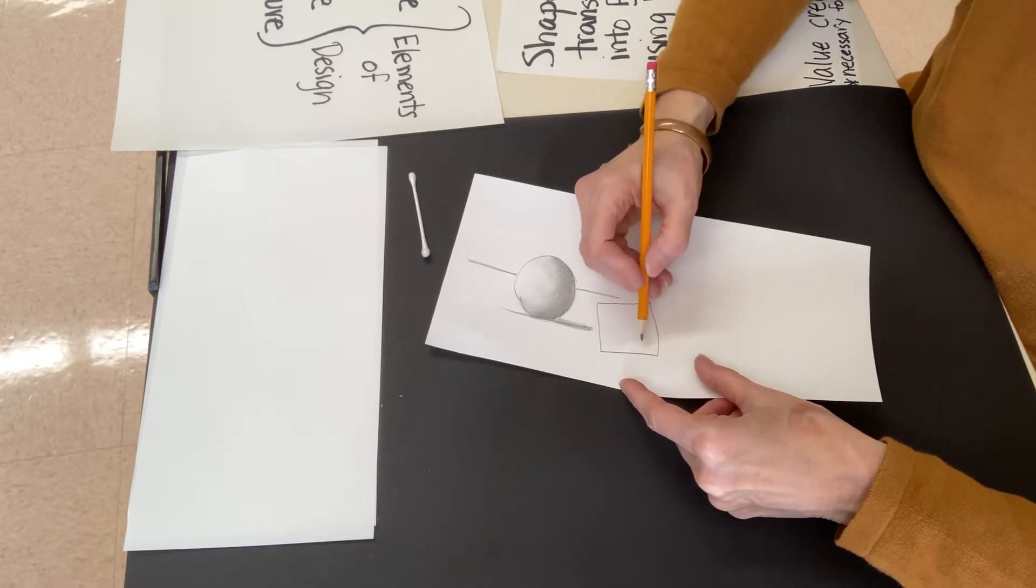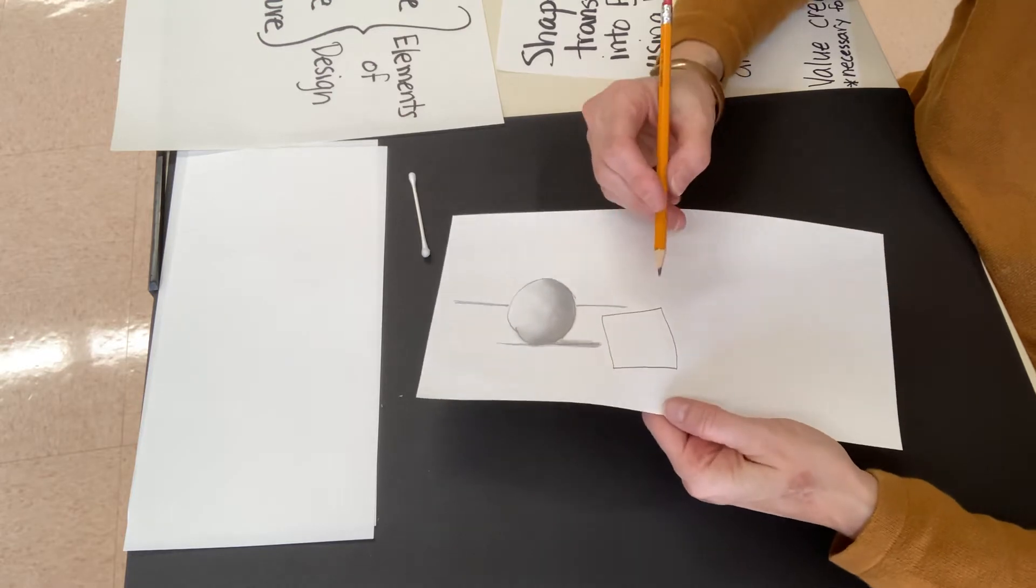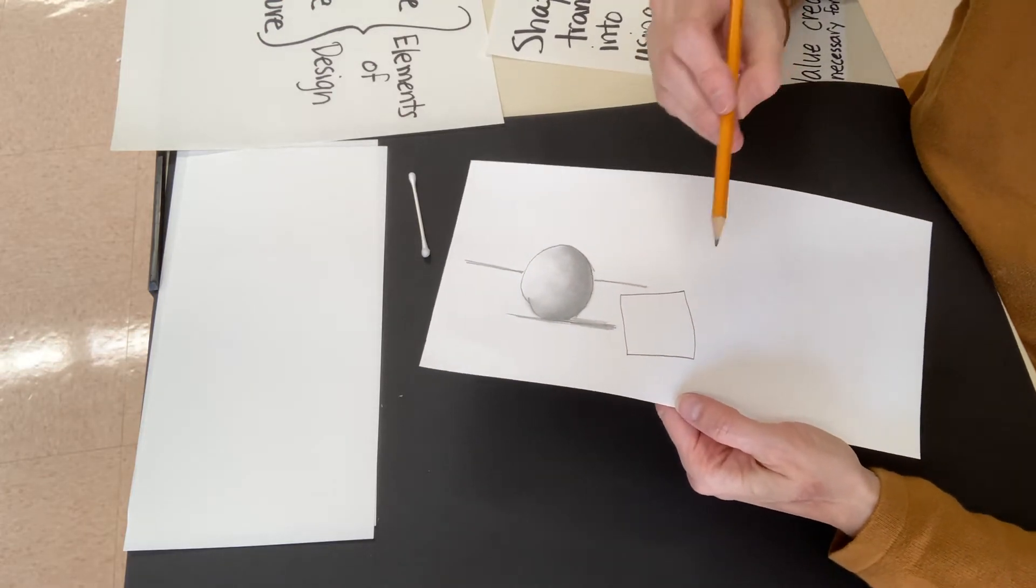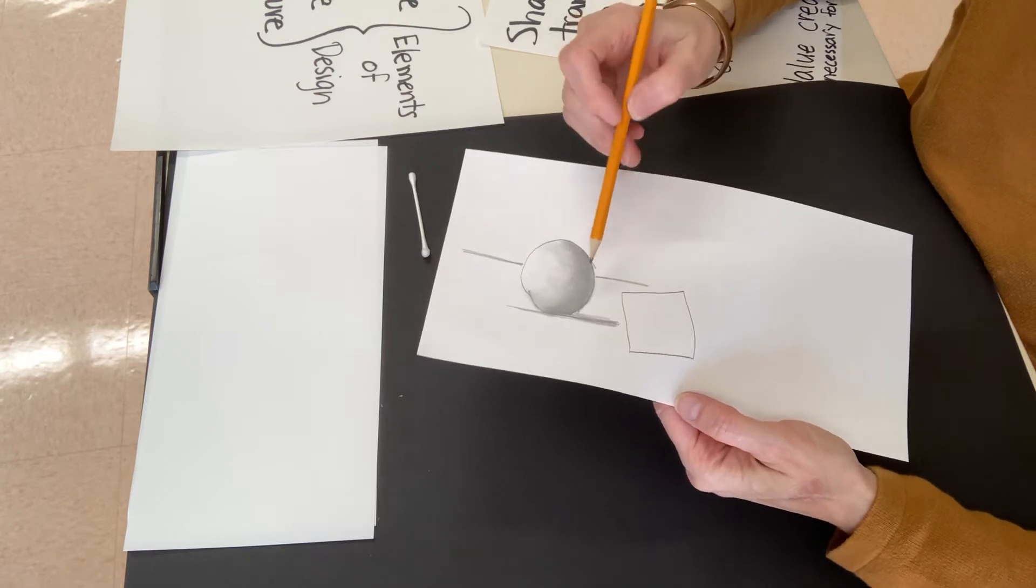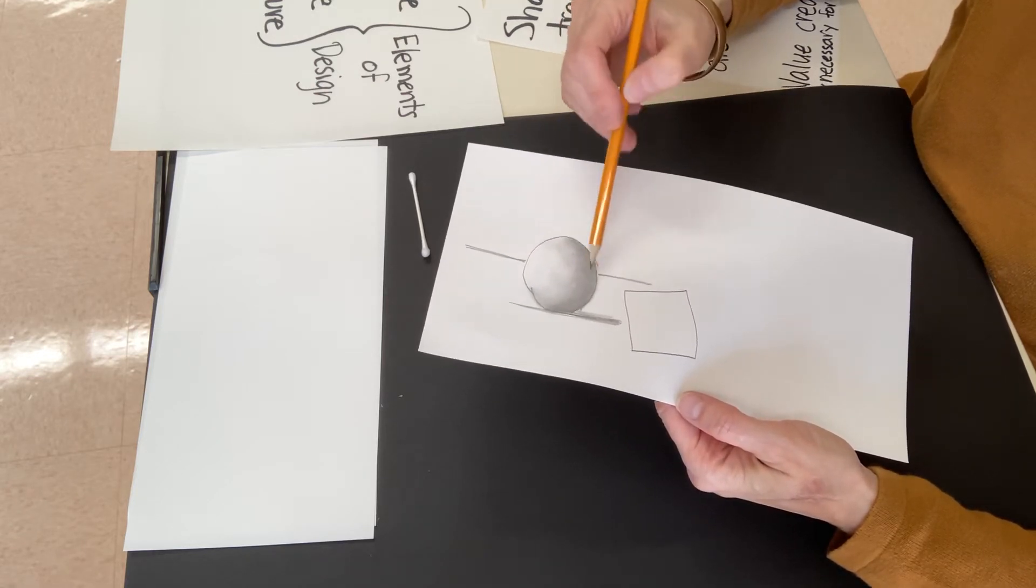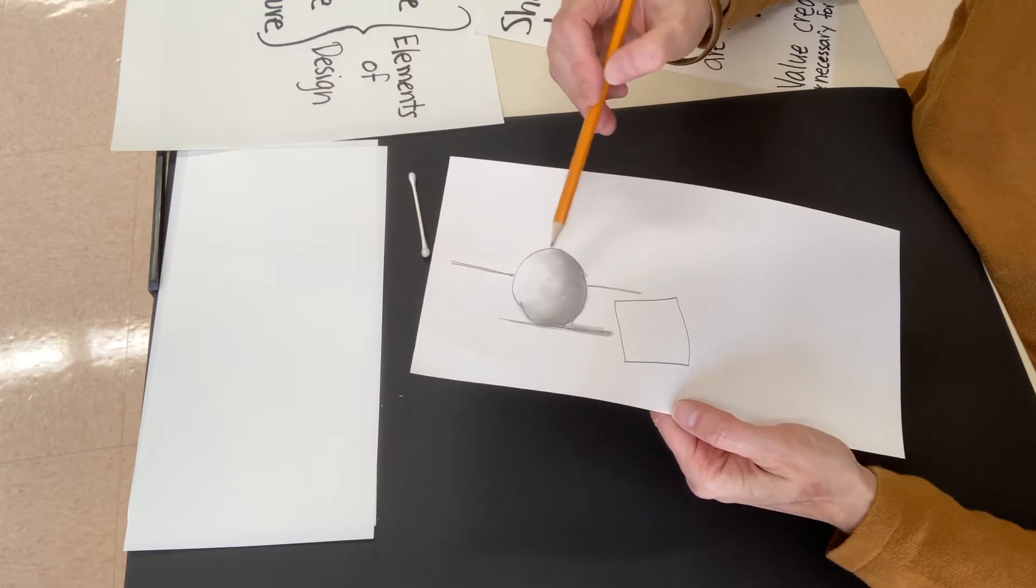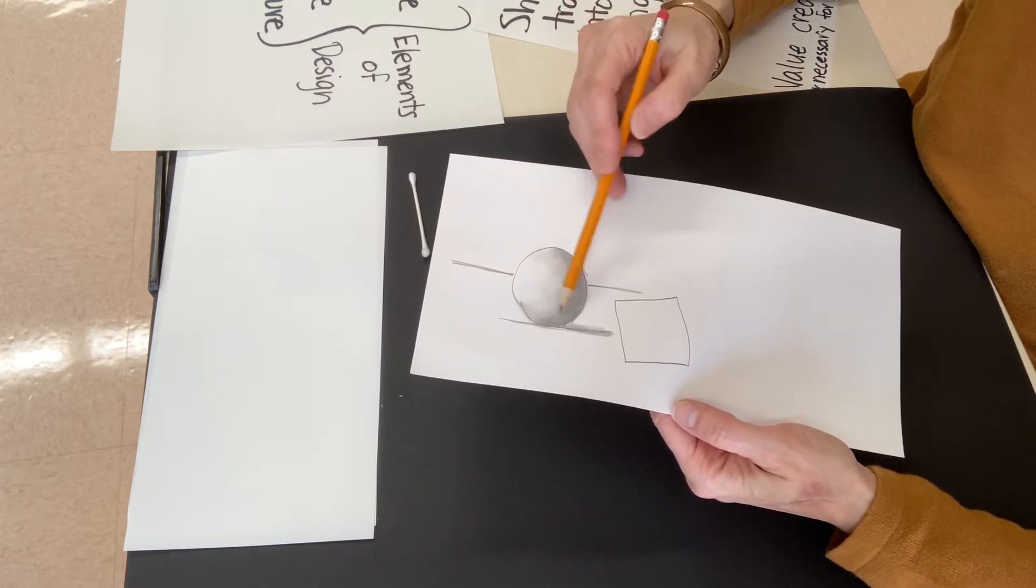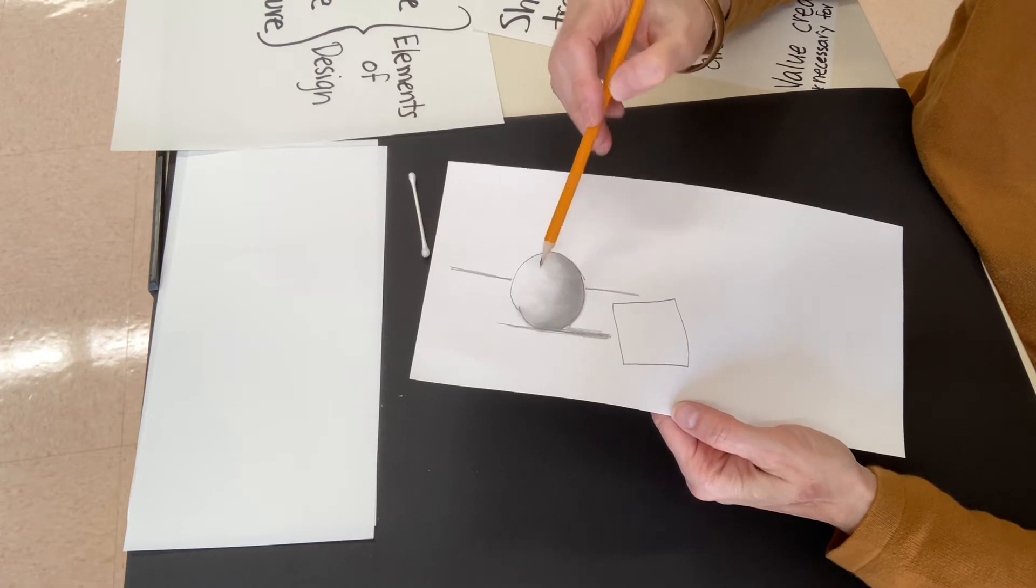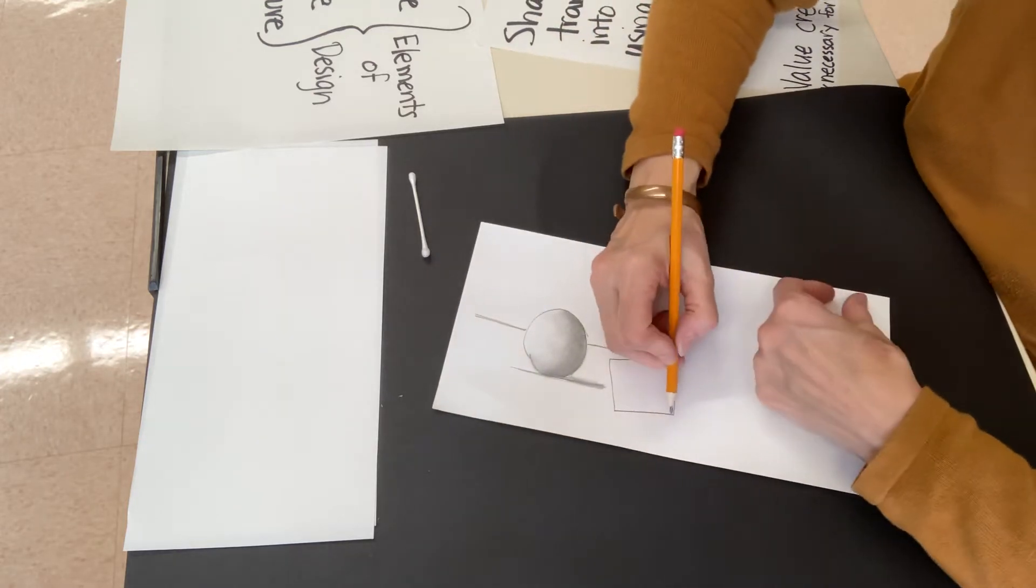And with the square, I want to show you a different technique that you can do with a pencil - that's just by adding pressure to create value. You can use the smudging, smushing it out and making it get lighter and lighter and lighter, or you can use pressure.